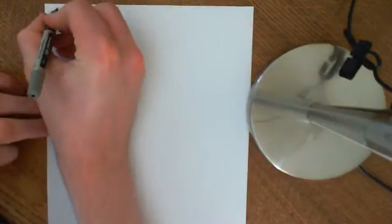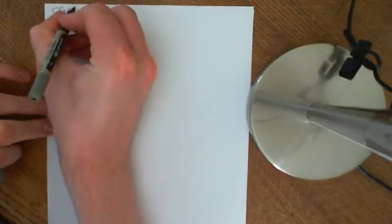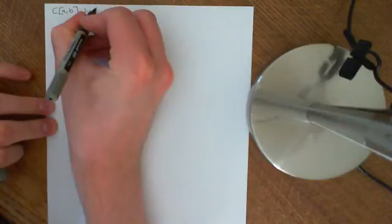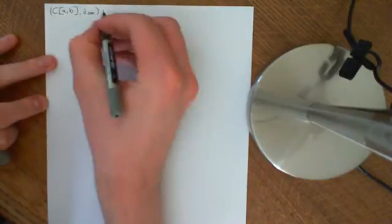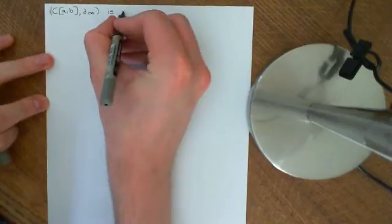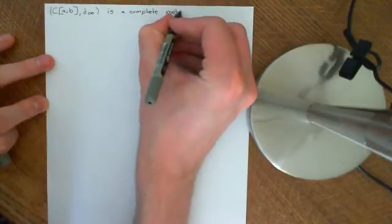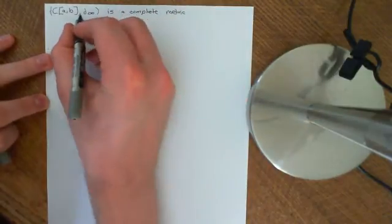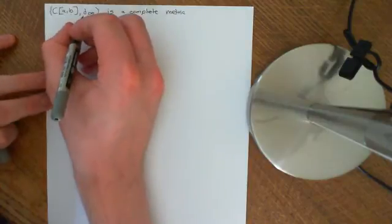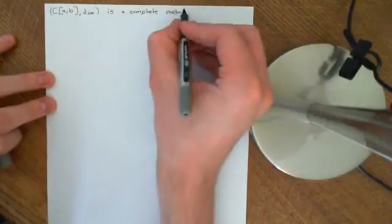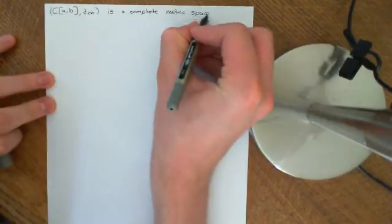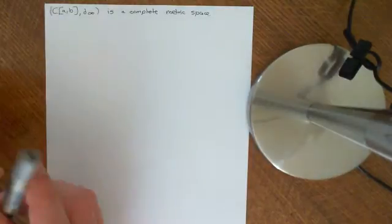Welcome to this next video in the playlist on functional analysis. In this video, what we're going to do is prove that the metric space C[A,B] with the supremum metric, which is the metric space we've been studying for the past few videos, is a complete metric space. That is, any Cauchy sequence of functions in this metric space which is Cauchy according to the supremum metric is going to converge to a limit within this metric space.